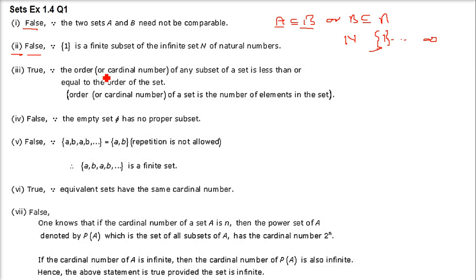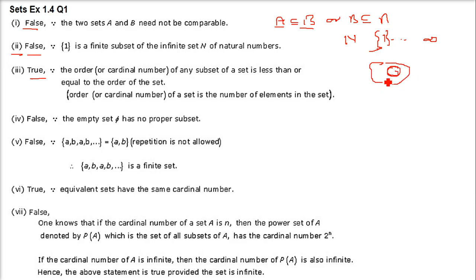Next: every subset of a finite set is finite. When we have a finite set, if we take a subset, it will be finite. So this is true, because the cardinality or number of elements is known, and when we take a subset it will be lesser than the actual elements — so it will also be countable.